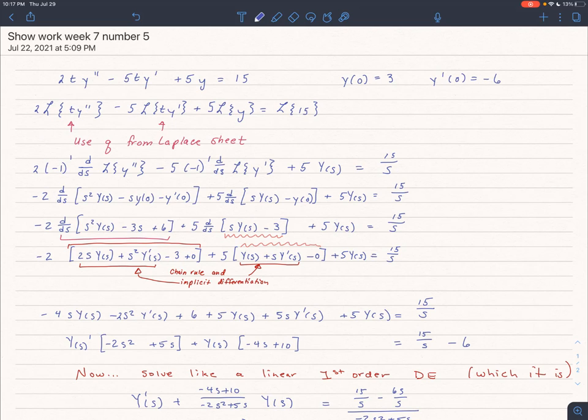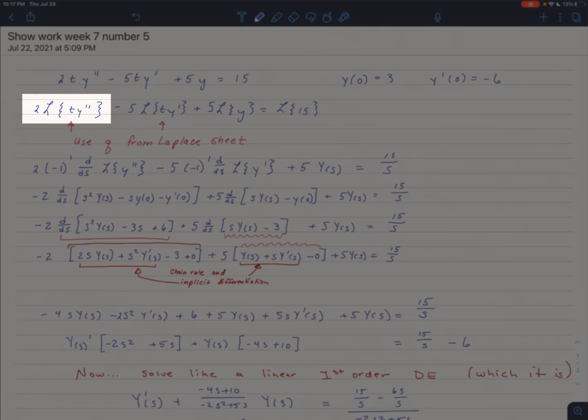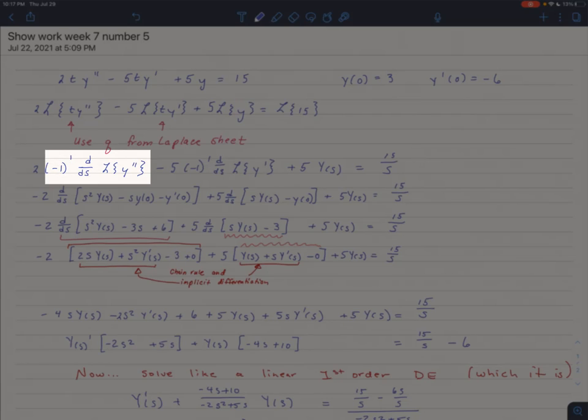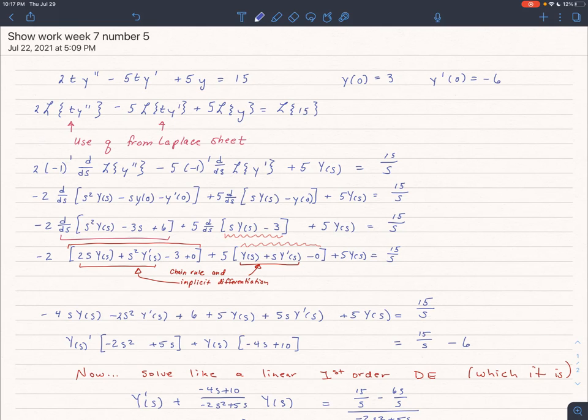So t to the first means that we're going to multiply that Laplace transform, that derivative, by negative 1 to the first power times the derivative with respect to s of whatever the Laplace transform of y double prime is. We'll do the same thing with the next term.